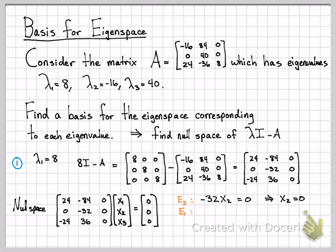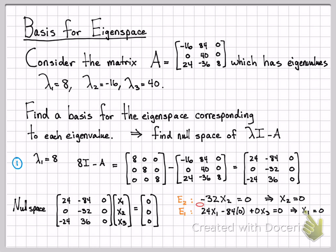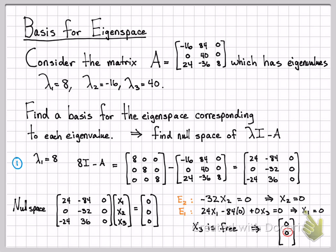Looking at equation two: negative 32 times x2 must equal zero, so x2 has to be zero. Looking at equation one: 24x1 minus 84x2 must equal zero. Since x2 is zero, x3 can be anything because it's being multiplied by zero — it's x1 that must equal zero. Simplifying gives 24x1 equals zero, so x1 is zero. Both x1 and x2 have to be zero, and x3 is a free variable.